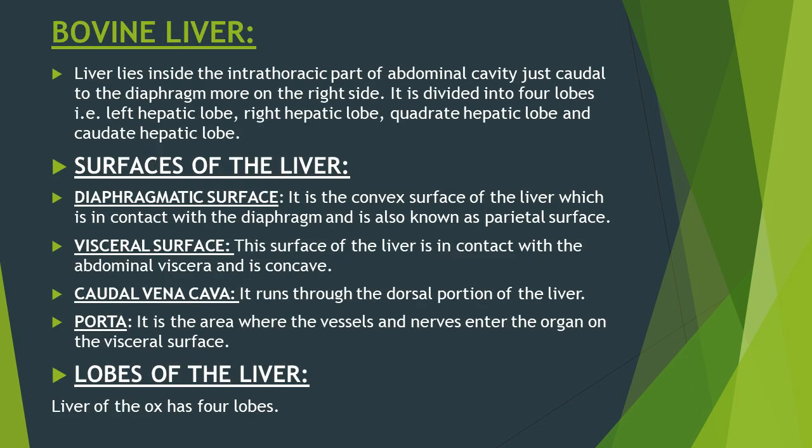Liver lies inside the intrathoracic part of abdominal cavity, just caudal to the diaphragm, and it is present more on the right side of the body. The liver is divided into four lobes: left hepatic lobe, right hepatic lobe, quadrate hepatic lobe, and caudate hepatic lobe.